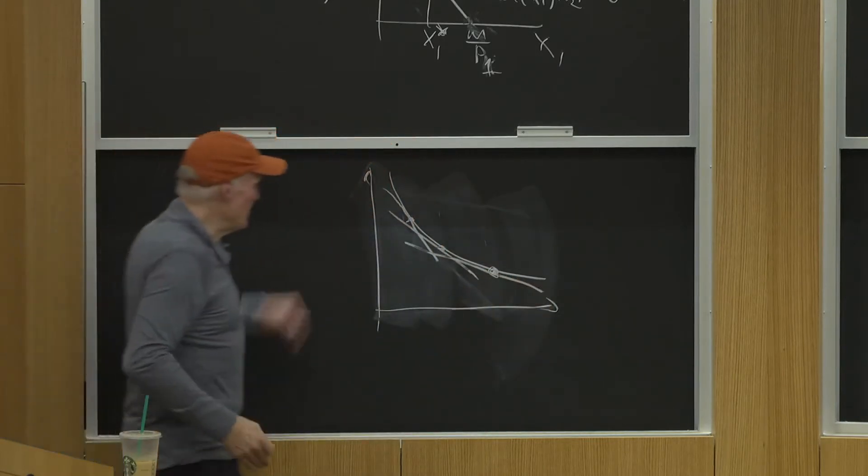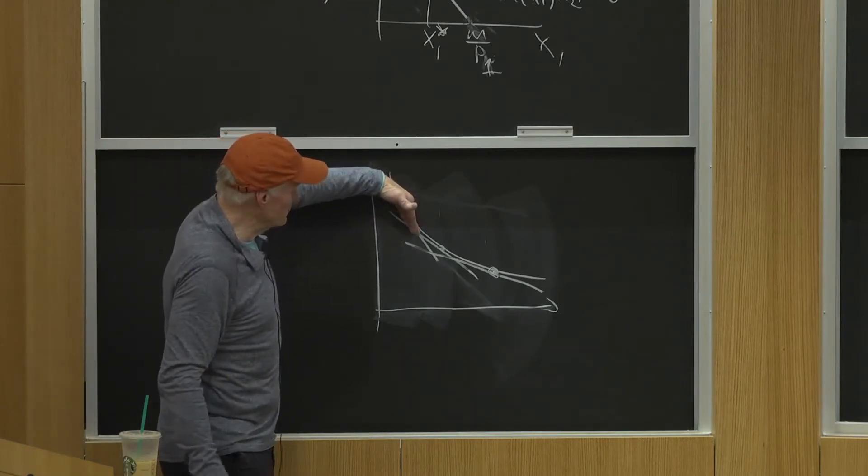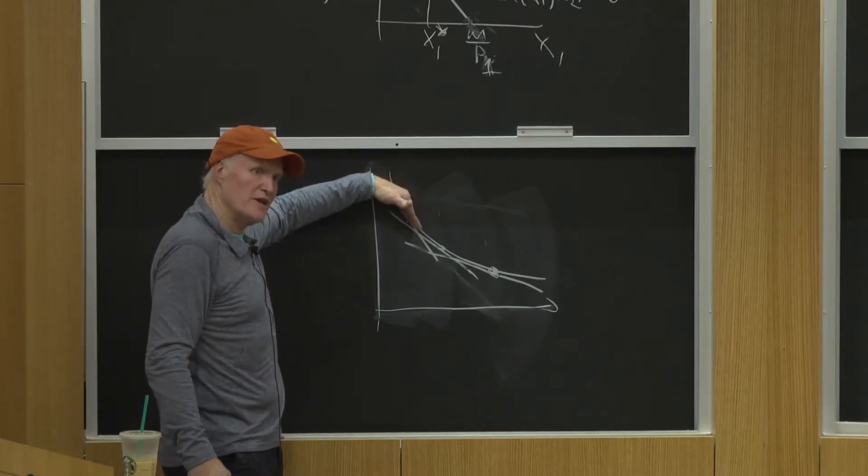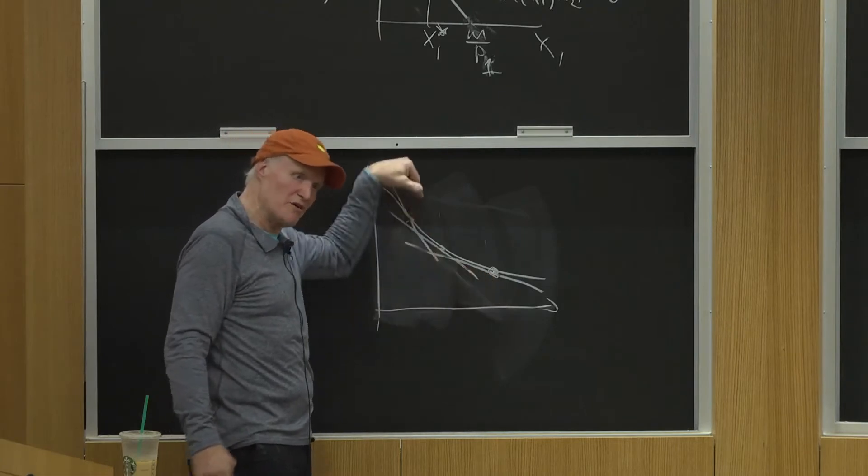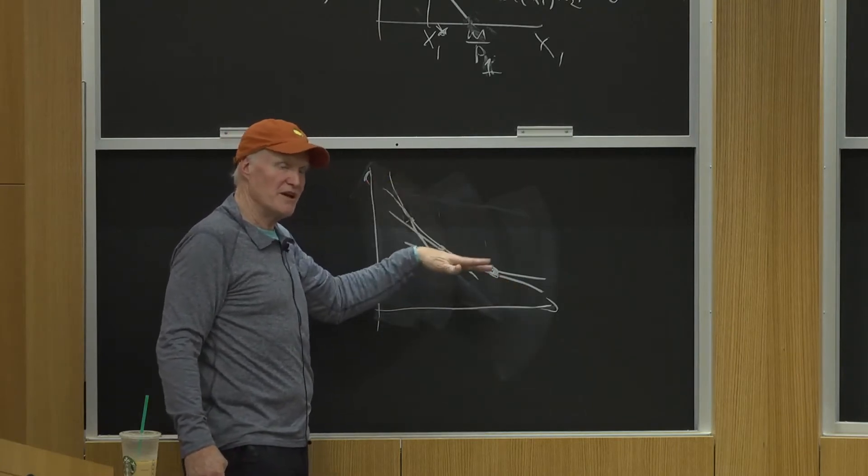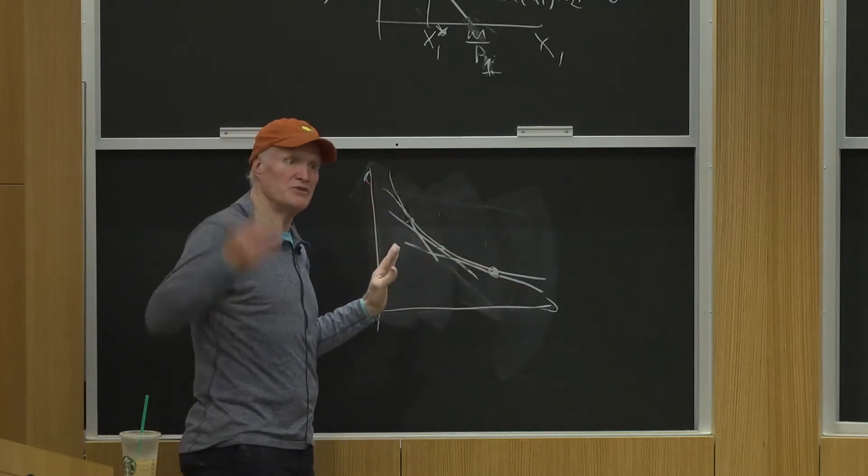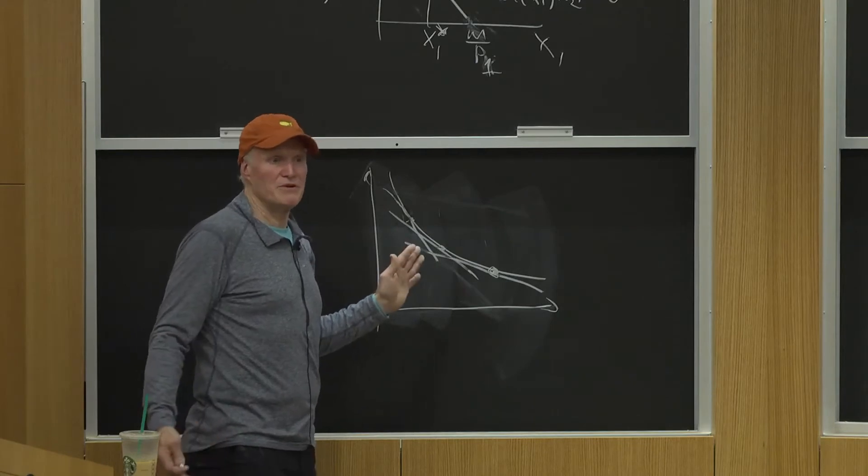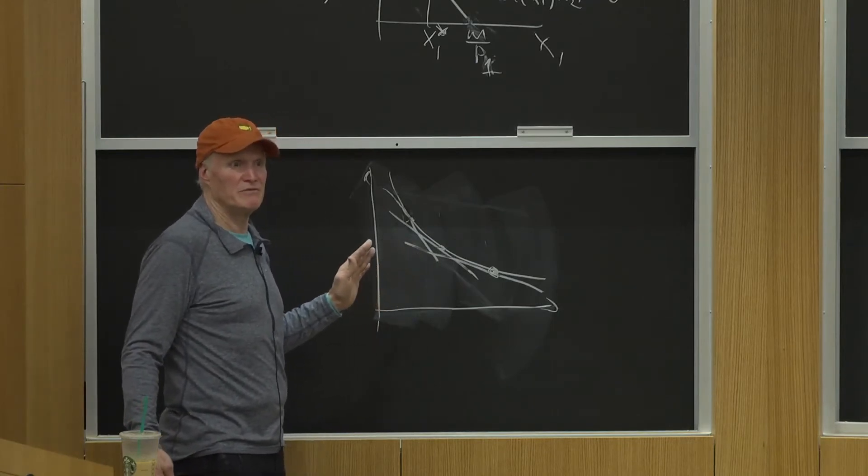I'm just sort of starting here and saying when good one's expensive, I'm over here. As good one gets cheaper, I'm moving around. So the curvature of that indifference curve is going to translate directly into these properties of this Hicksian demand curve. Okay?